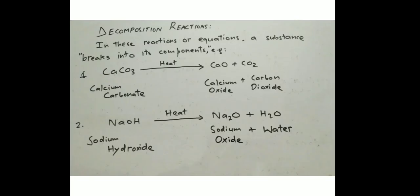Now we are going to decomposition reactions. This is a reaction in which a compound breaks into its components. For example, calcium carbonate decomposes into calcium oxide and carbon dioxide. If we heat sodium hydroxide, it will also be disintegrated into its components. This type of reaction is called a decomposition reaction.